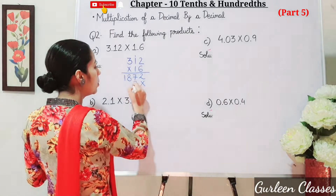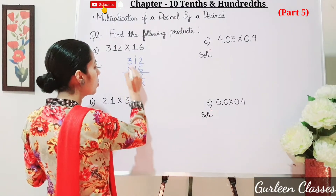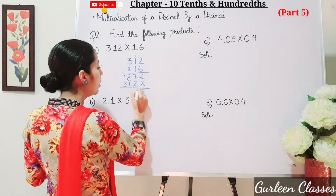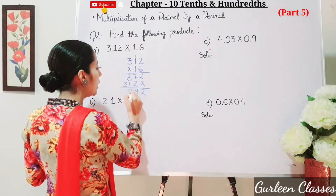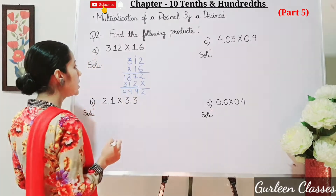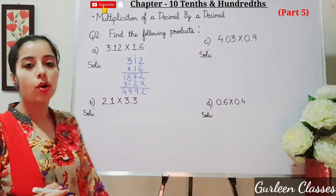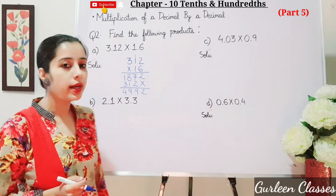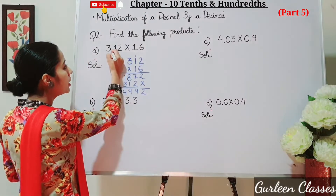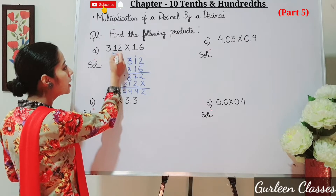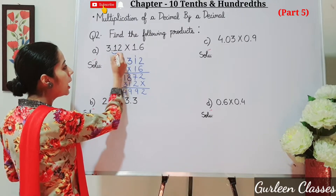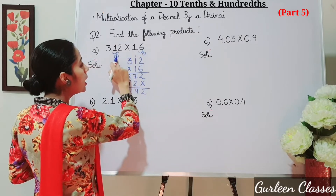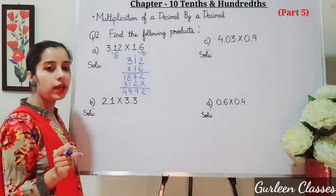So continuing the multiplication of 312 into 16: adding the partial products gives 2994. So the answer is coming 4992. Now, how do we place the decimal point? Just see the question — after the decimal point in 3.12, how many digits are there? 2. And here in 1.6, after the decimal point, how many digits are there? 1. Now add 2 plus 1 equals 3.